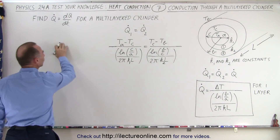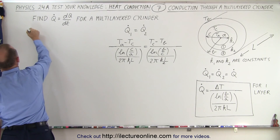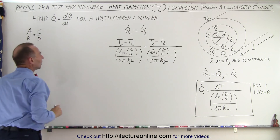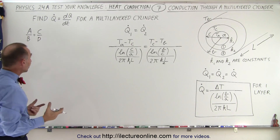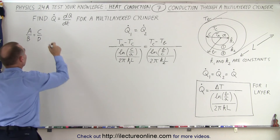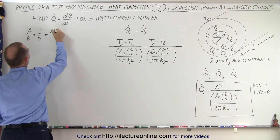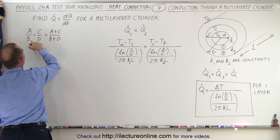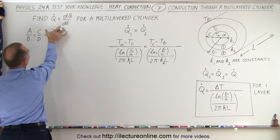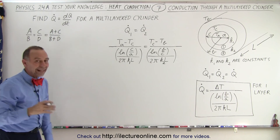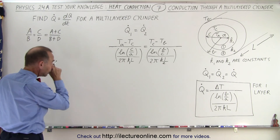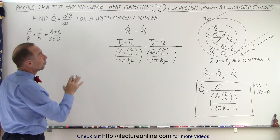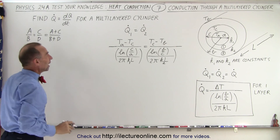Now let's proceed with this principle. If we have two fractions that equal each other — A over B equals C over D — then we can also add the two numerators and write it as A plus C divided by B plus D. So if A over B equals C over D, we can add the two numerators and the two denominators together and still have the same ratio. That is indeed true, and we can use the same principle for what we have here.